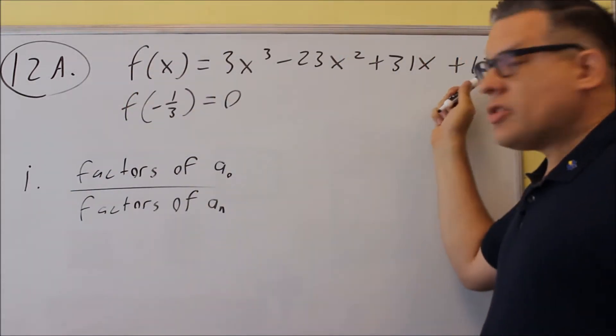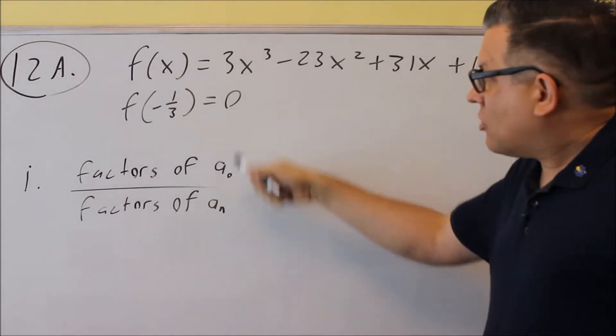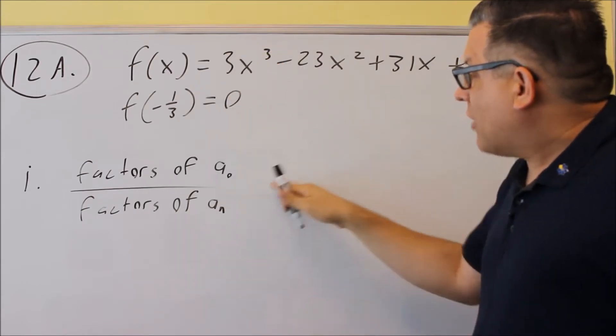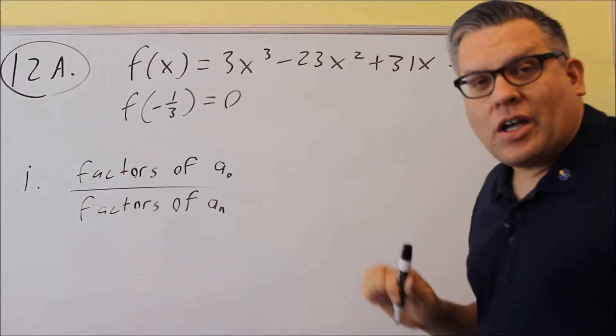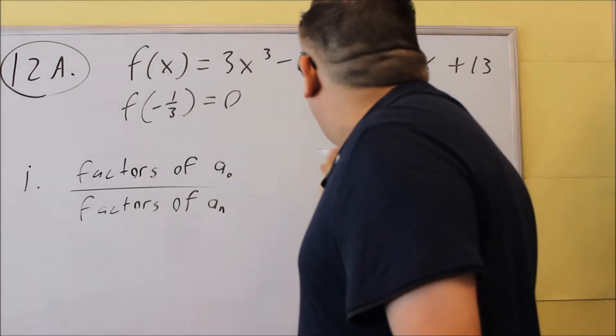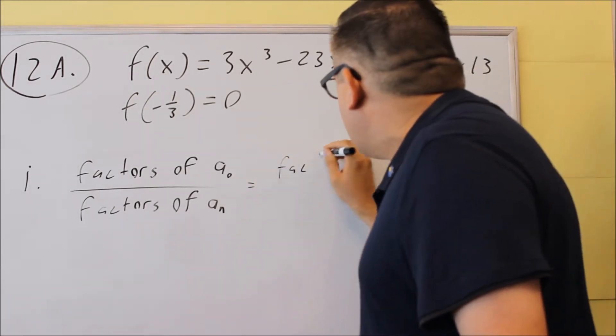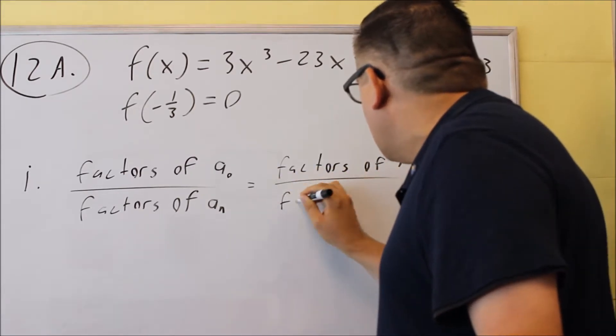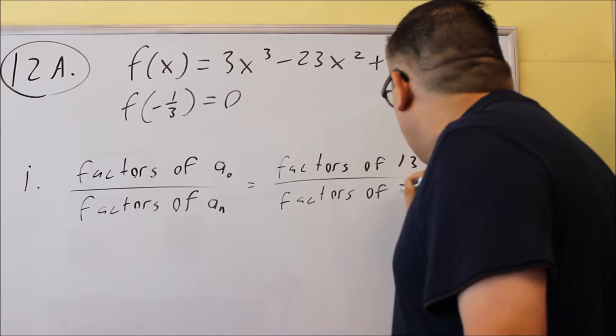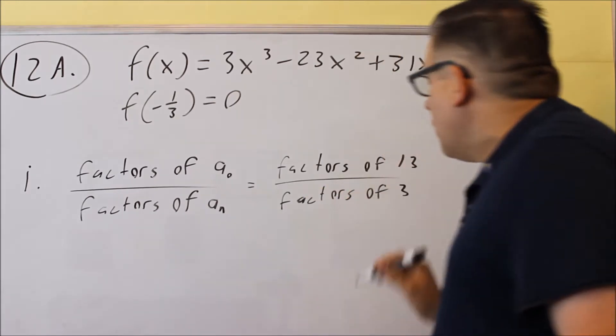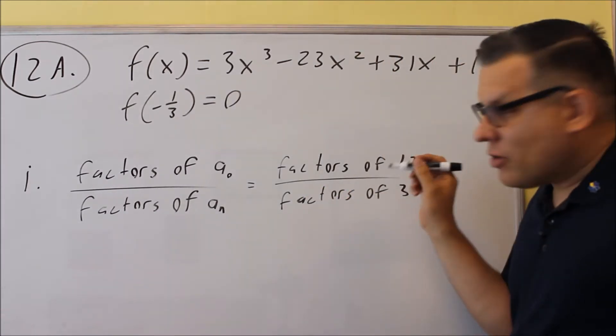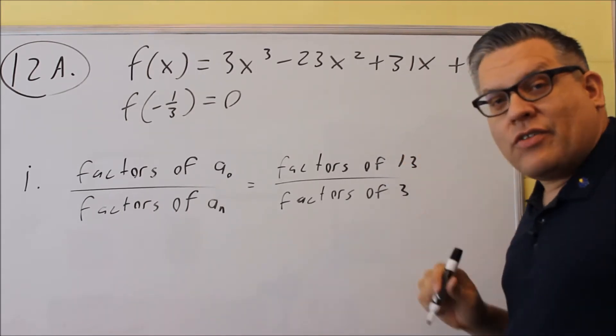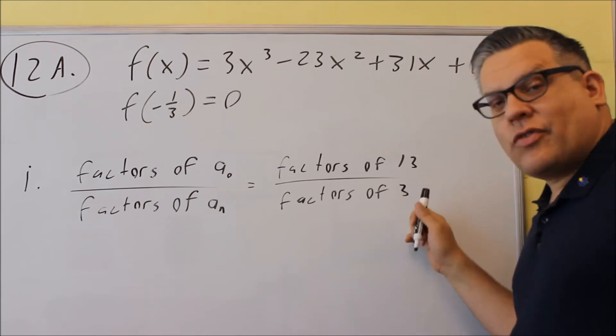Now the a sub zero is always the last number. The a sub n is always the number in front of the x with the highest power, so that's going to be this one. So we're going to do factors of 13 divided by factors of 3. Now a factor is the number that divides evenly into that one. So we're going to find all the numbers that divide evenly into 13, all the numbers that divide evenly into 3.